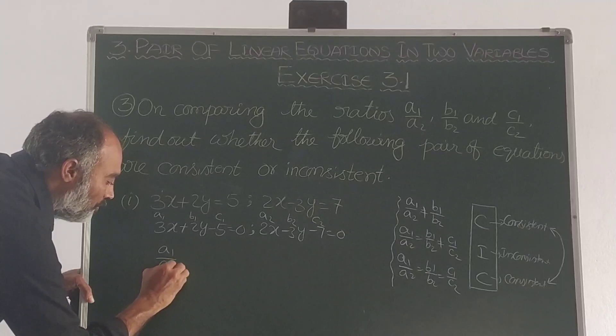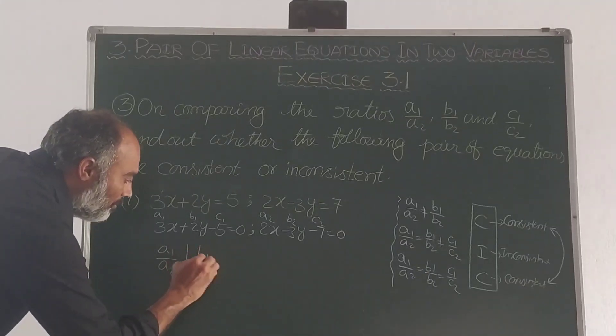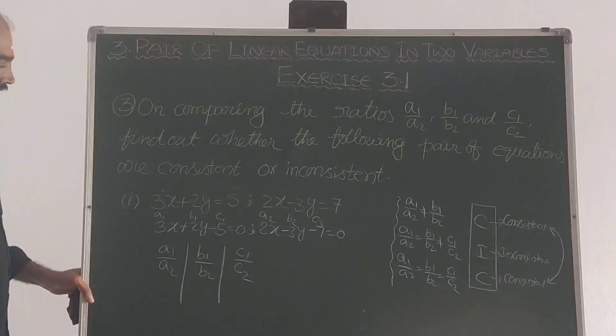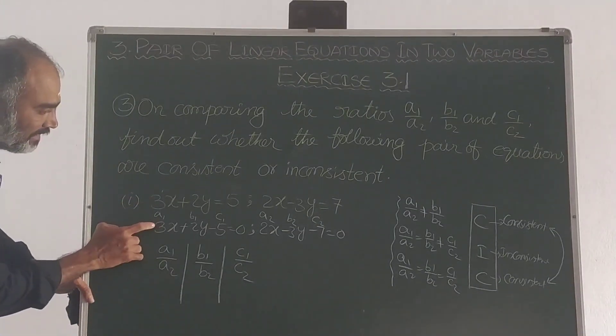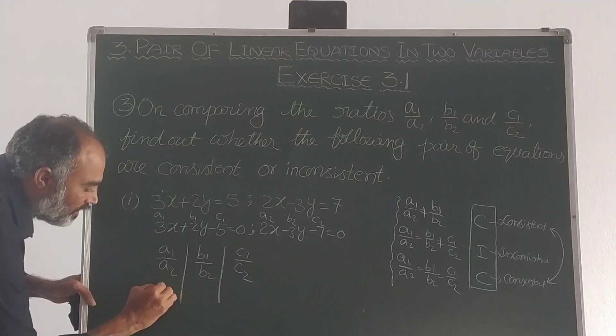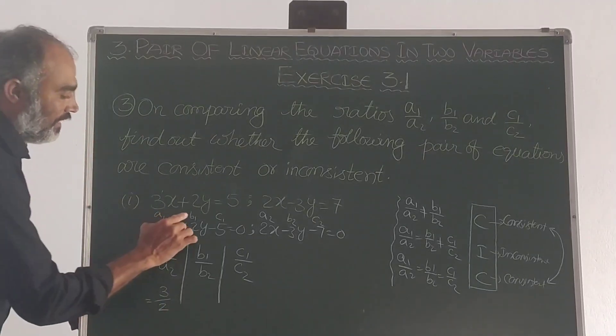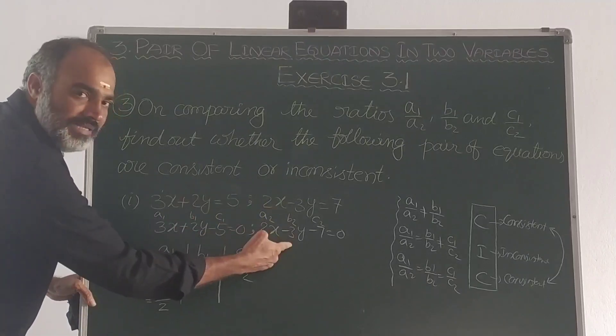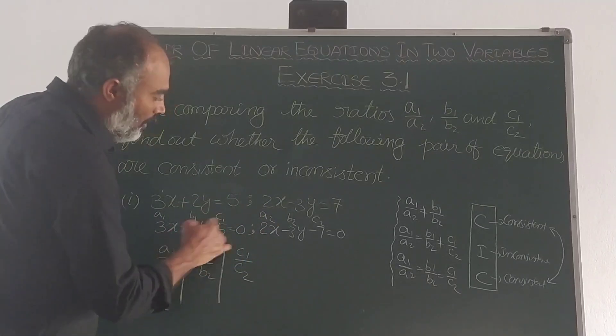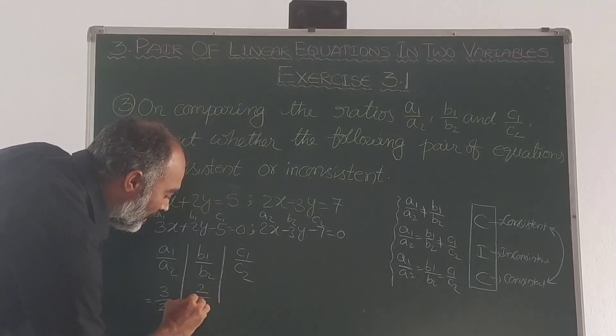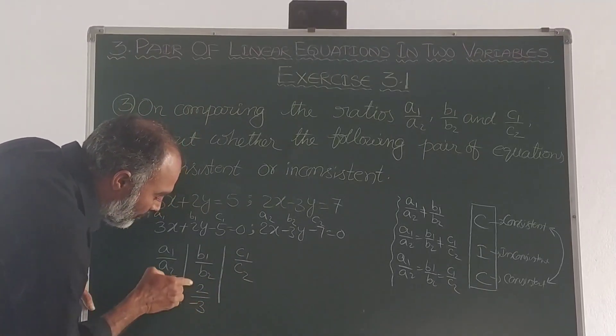Now find the values. a1 by a2 is 3 by 2, which equals 3 by 2. b1 by b2 is 2 by minus 3, which equals minus 2 by 3.